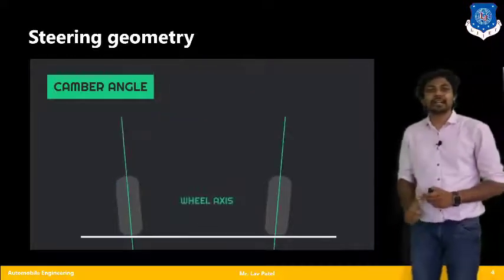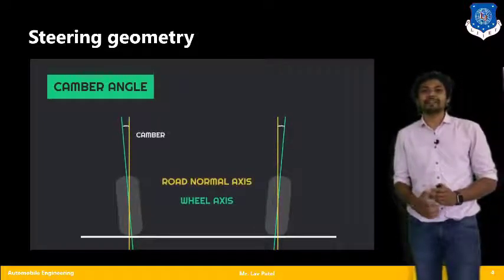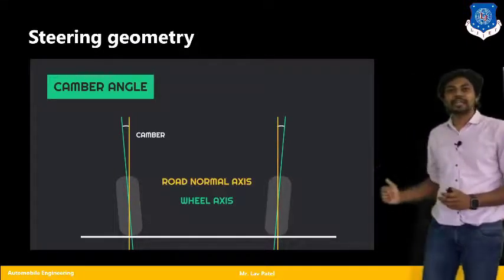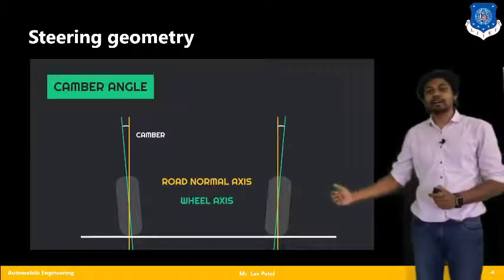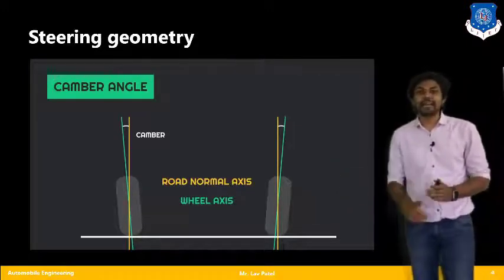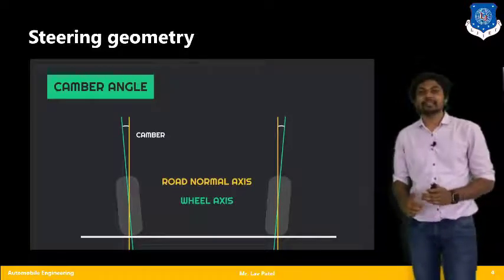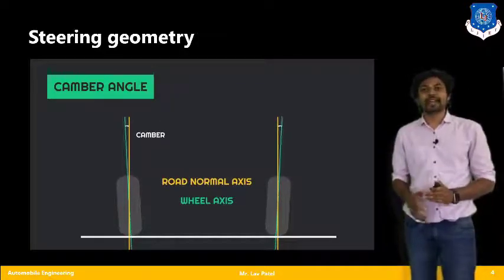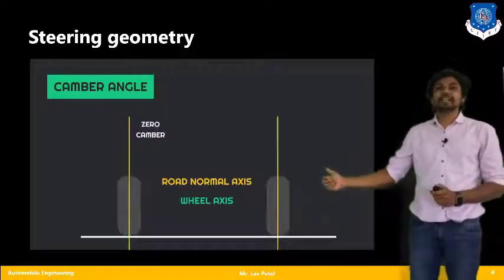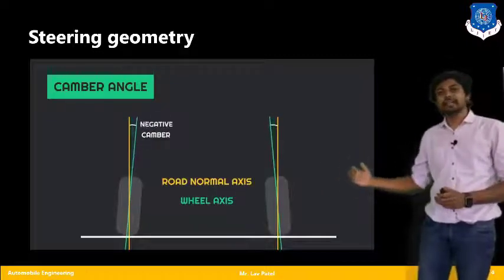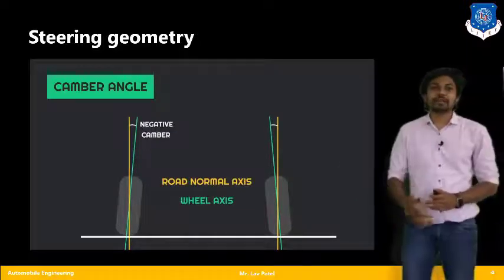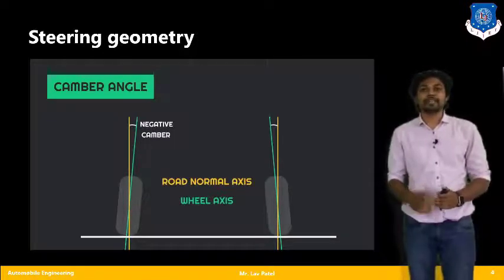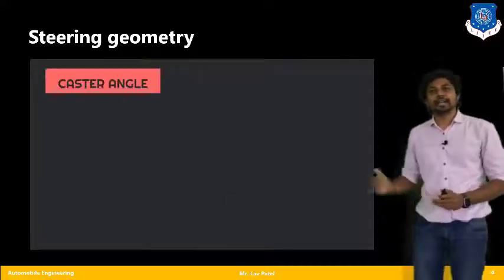Let us consider the camber angle first. We face the vehicle from the front direction to check the front tire wheel axis, shown in green color, and the road normal axis, shown in yellow color. The angle between the wheel axis and road normal axis is called camber. Camber can be positive, negative, or zero. For light motor vehicles and trucks, we prefer a positive camber angle for better steering geometry performance.